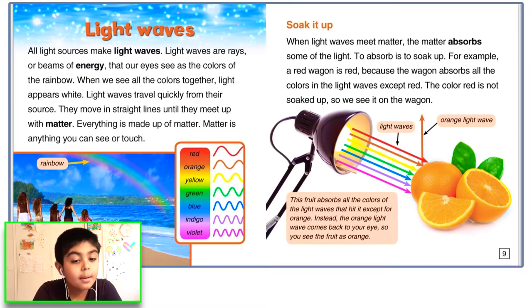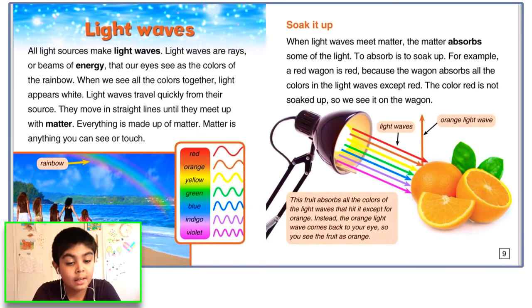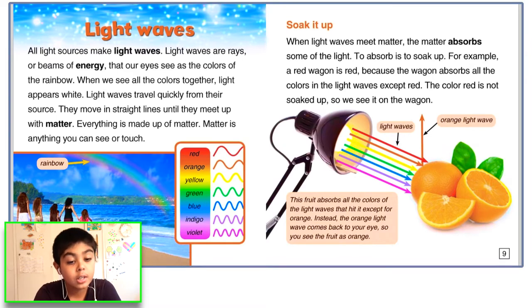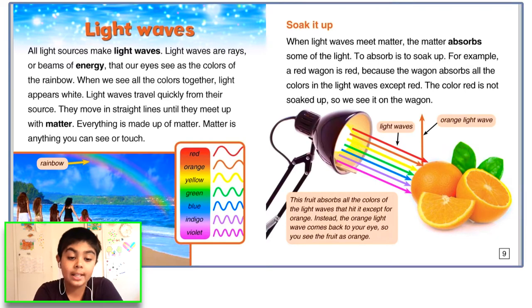When light waves meet matter, the matter absorbs some of the light. To absorb is to soak up. For example, a red wagon is red because the wagon absorbs all the colors in the light waves except red. The color red is not soaked up, so we can see it on the wagon.